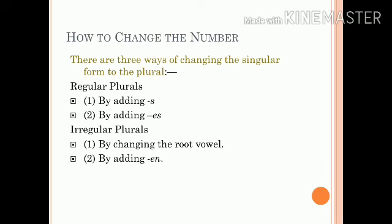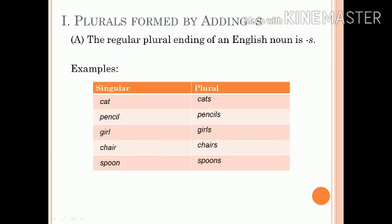There are three ways of changing the singular form to the plural. Number one: by adding S or ES — such plurals are known as regular plurals. The second way is by changing the root vowel. The third way is by adding EN. Plurals formed in these latter ways are known as irregular plurals. The most common way of changing singular to plural is by adding S.